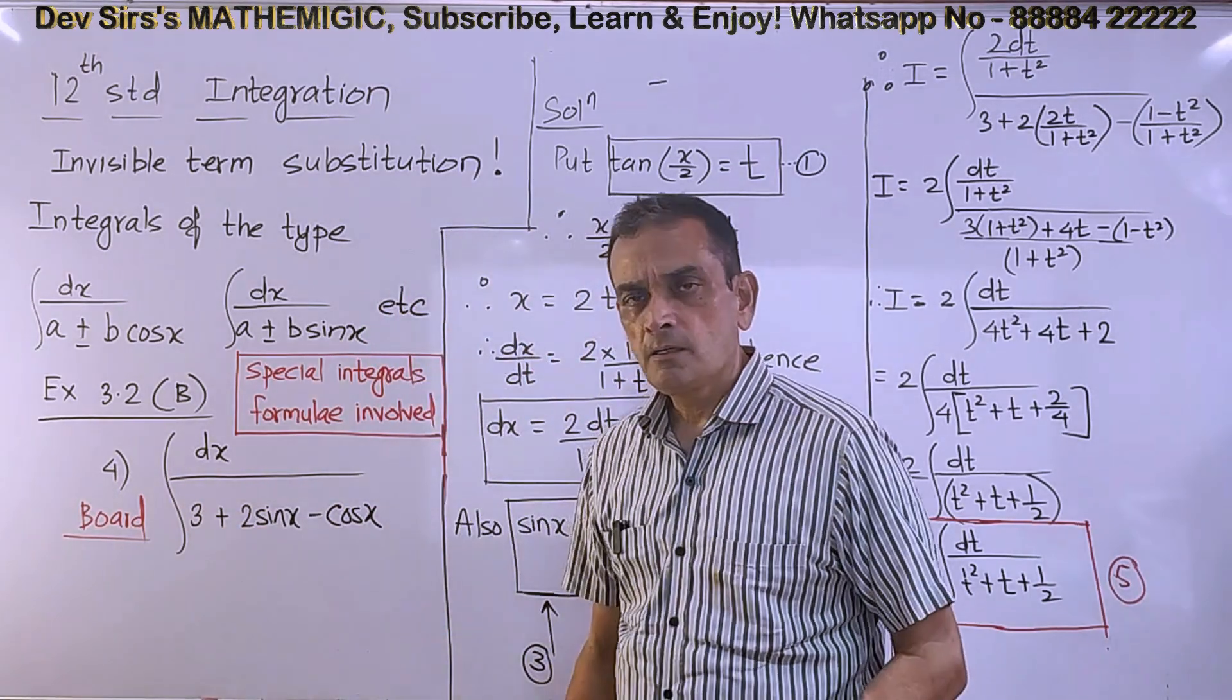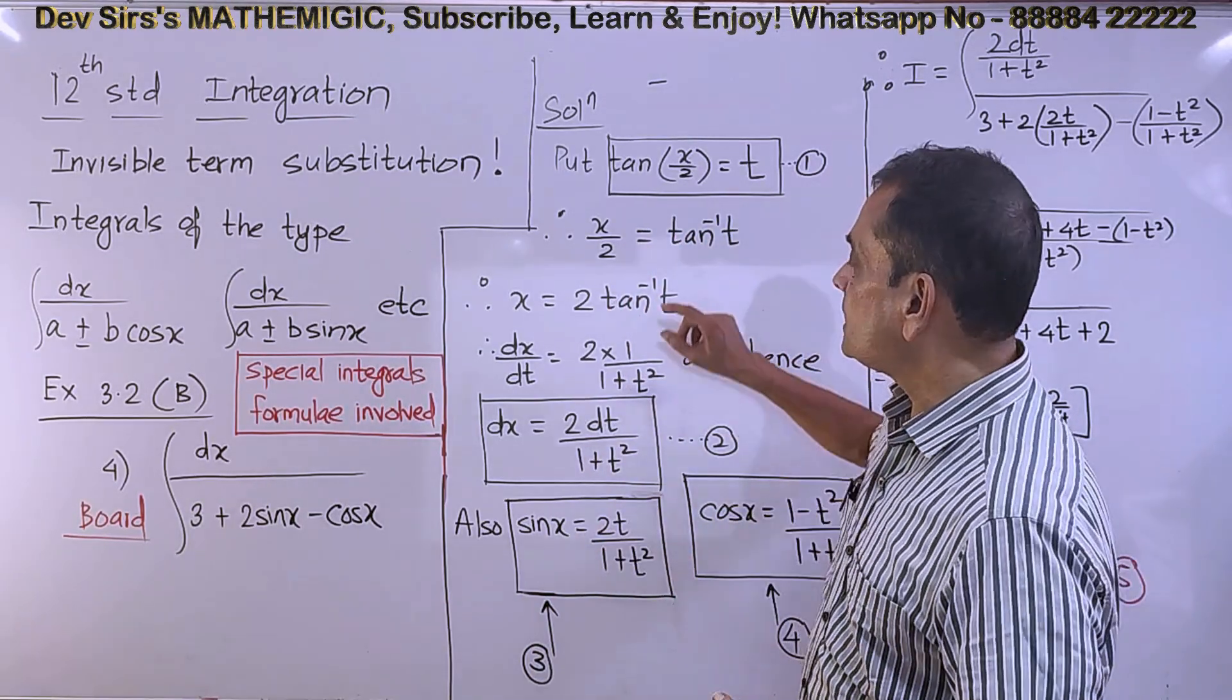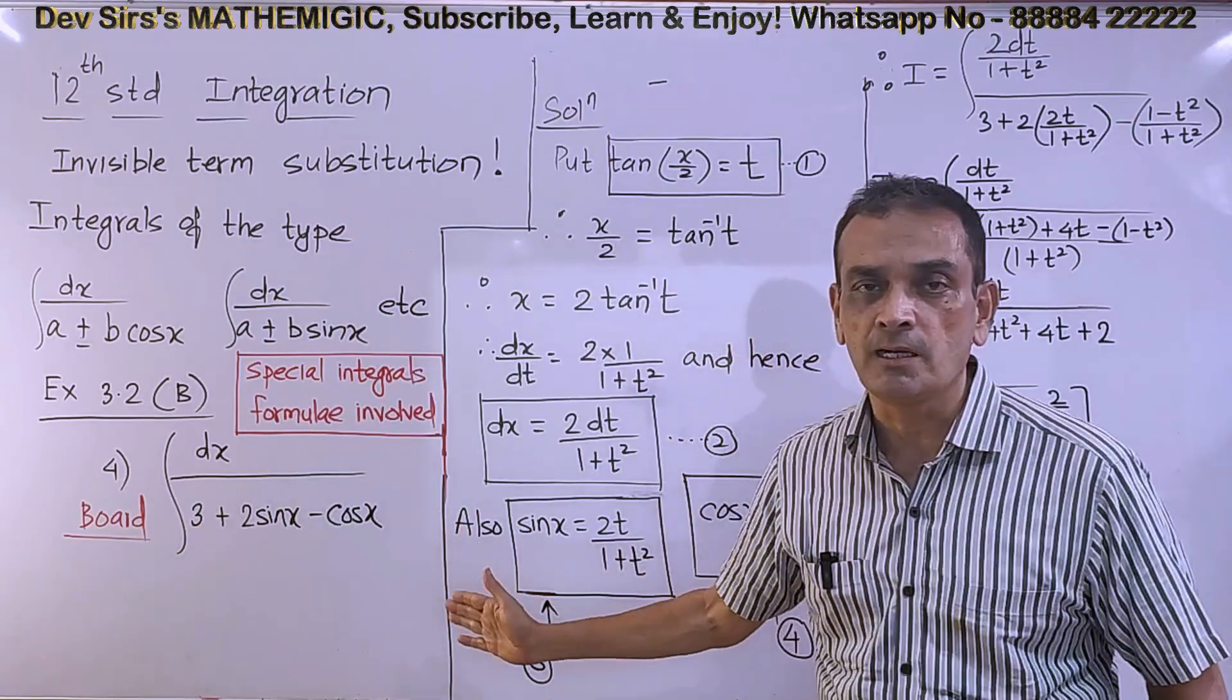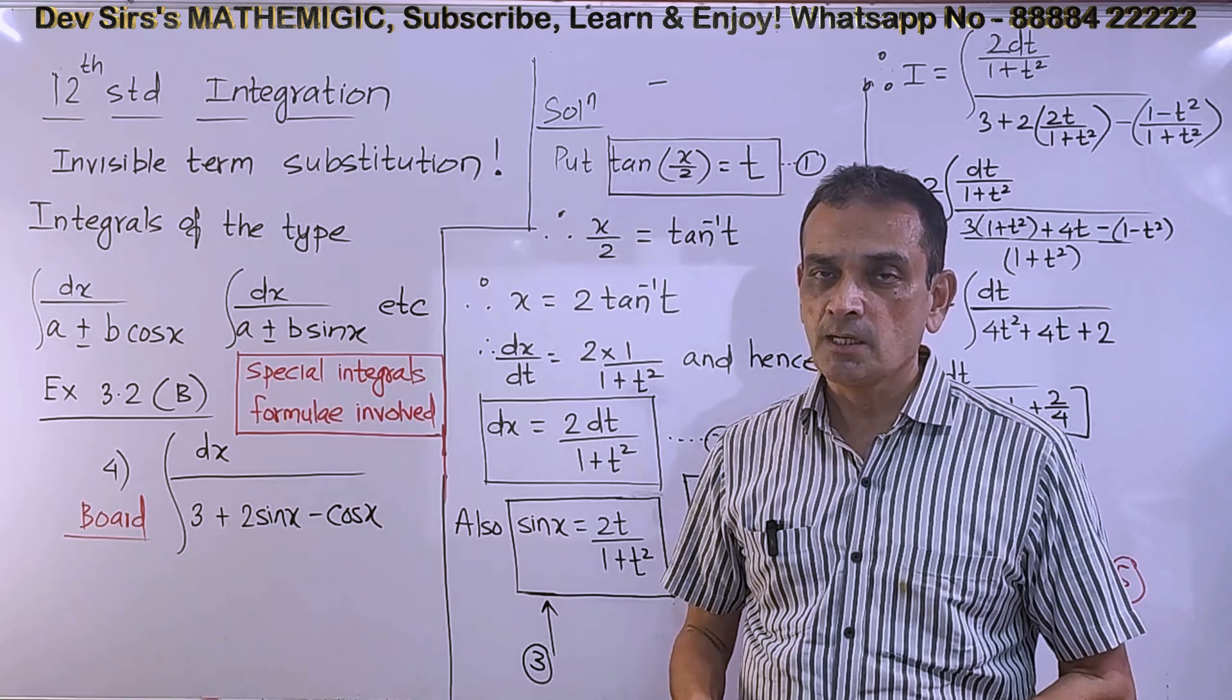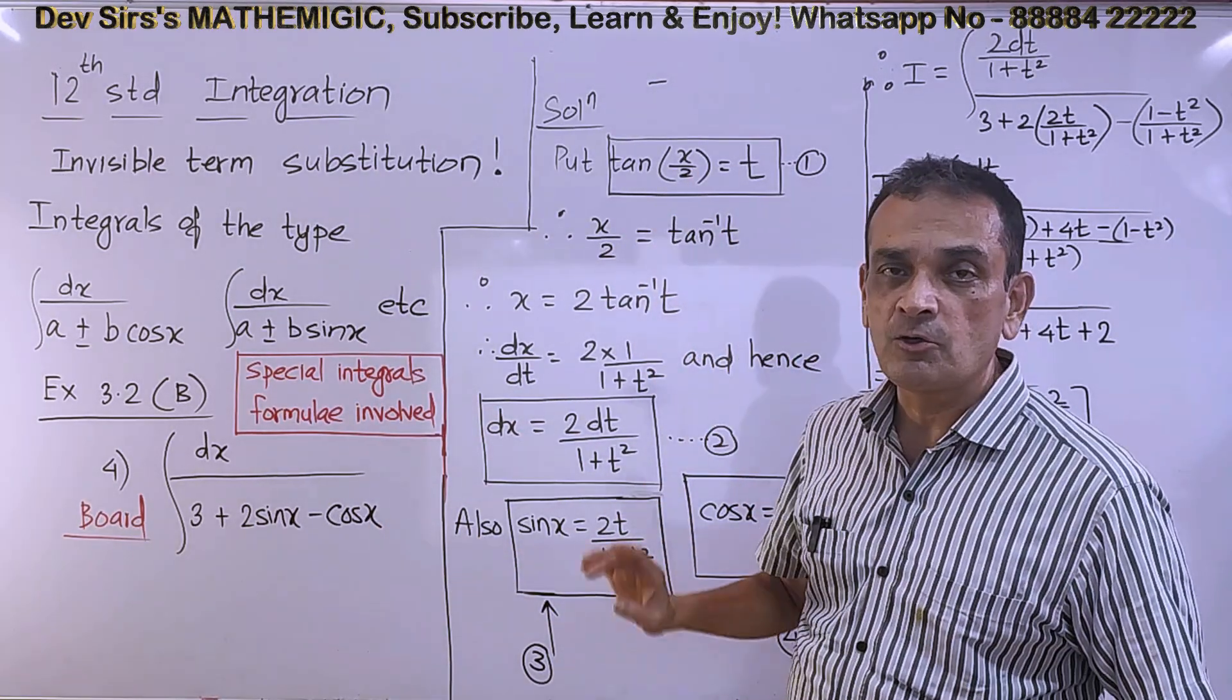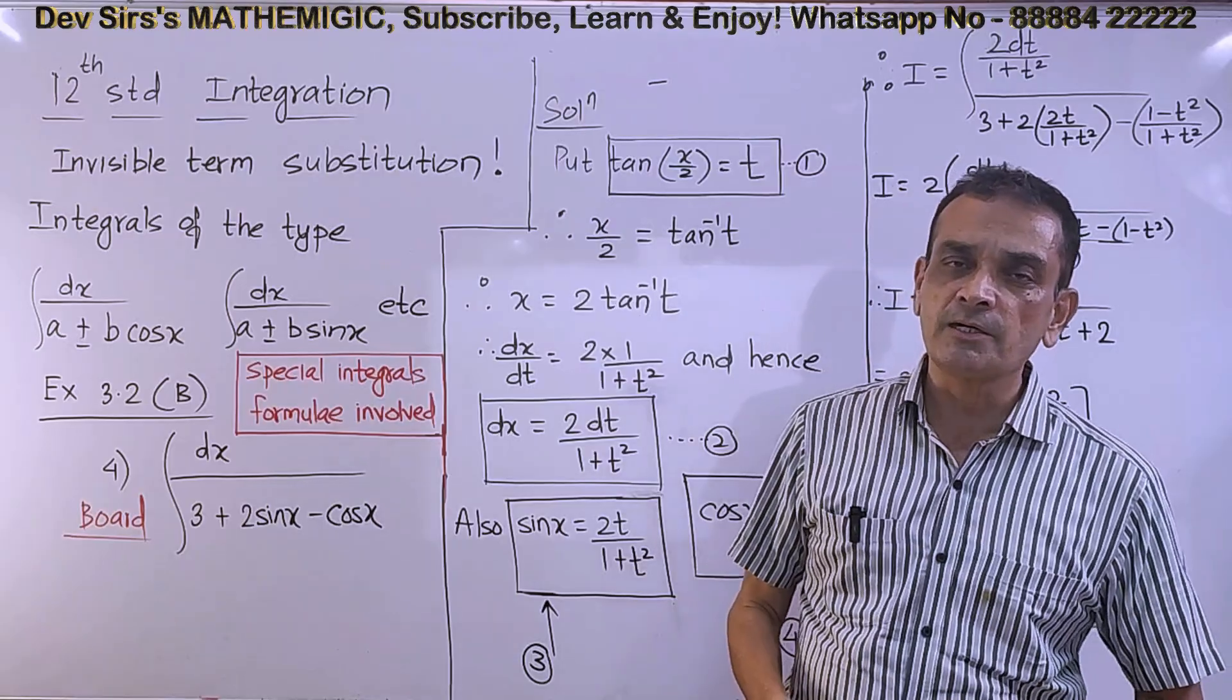If sin squared x or cos squared x was there, we have already seen the method: divide each term by cos squared x and solve, put tan x equal to t. But here, only sin x or only cos x or both are present. Let us go straight to the substitution. Why is it called invisible term substitution? Because I am going to substitute tan(x/2) equal to t.